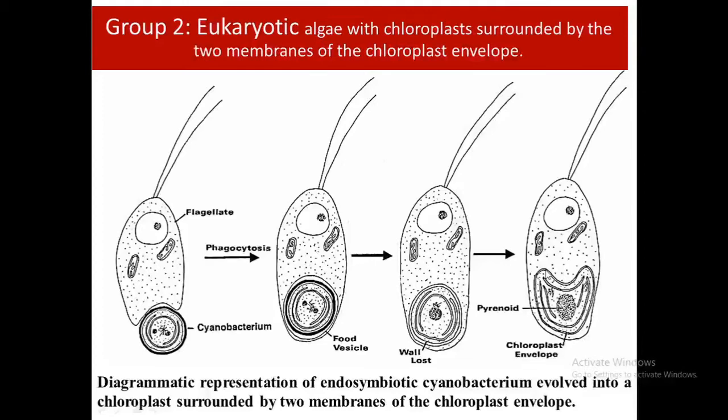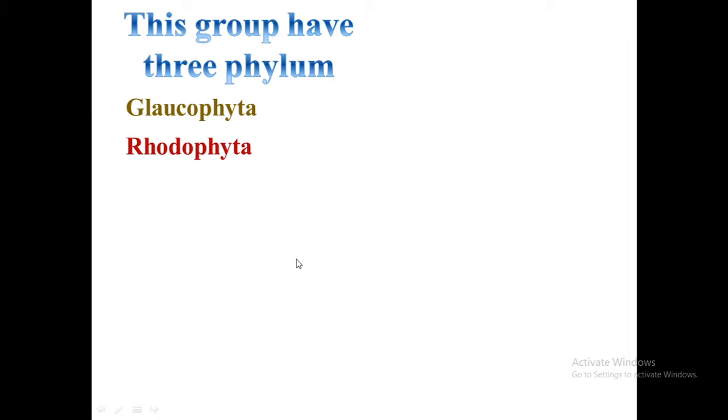This group has three phyla. Glaucophyta represents an intermediate position in the evolution of chloroplasts, because the endosymbiotic alga has not completely evolved into a chloroplast — photosynthesis is carried out by modified endosymbiotic cyanobacteria. Whereas rhodophytian and chlorophytian algae represent the completion of this evolutionary pathway into mature chloroplasts.